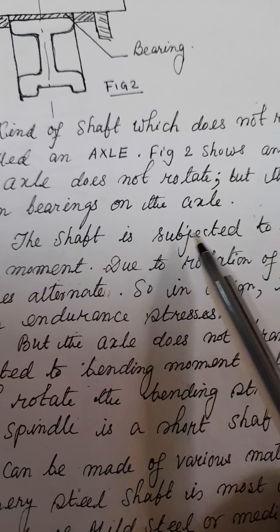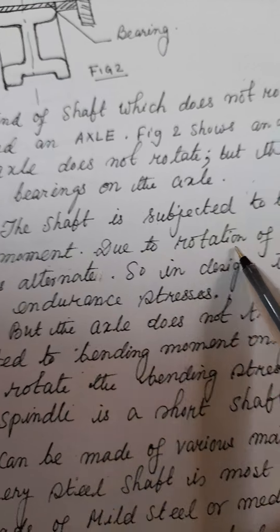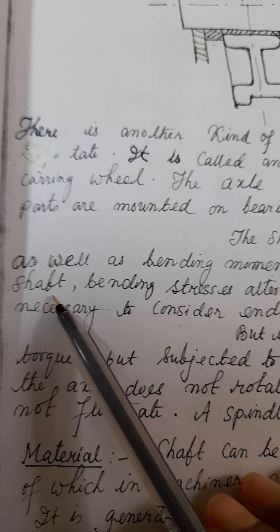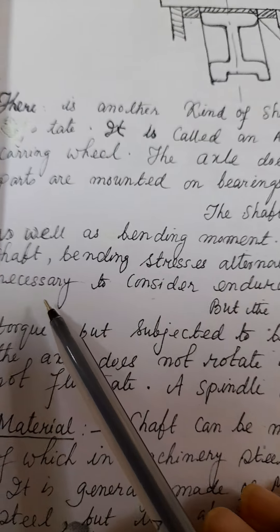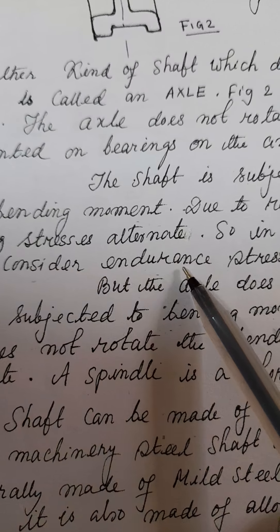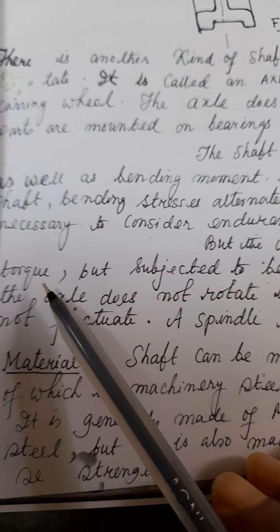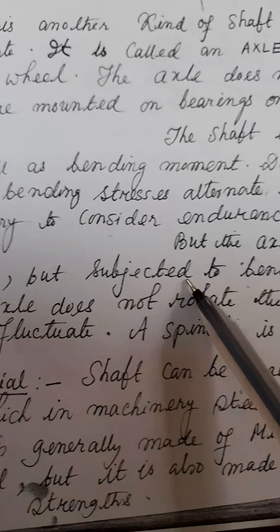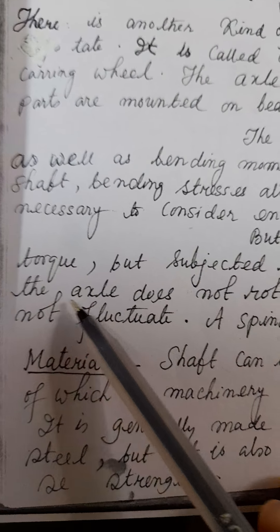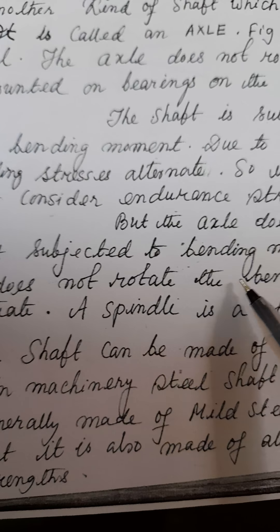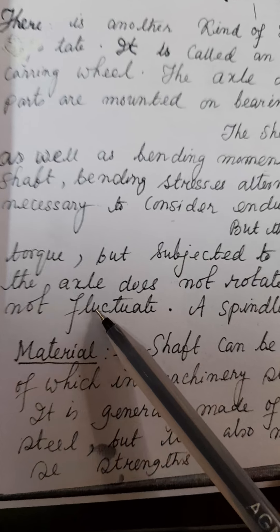The shaft is subjected to torsion as well as bending moment. Due to rotation of the shaft, bending stresses alternate. So in design, it is necessary to consider endurance stresses. But the axle does not transmit torque — it is subjected to bending moment only. Since the axle does not rotate, the bending stresses do not fluctuate.